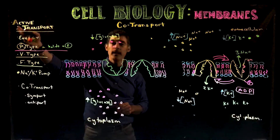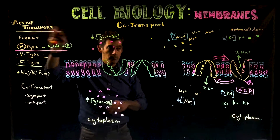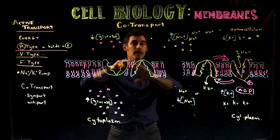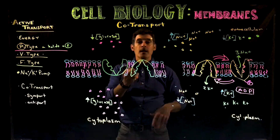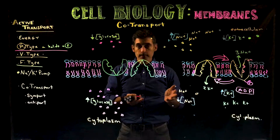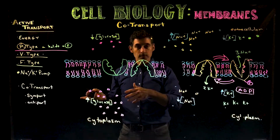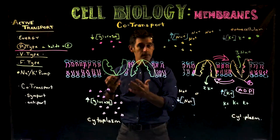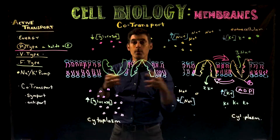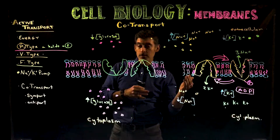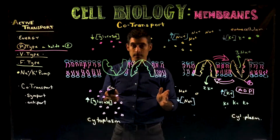Co-transport is another type of active transport. We're still talking about active transport, cell membranes, transmembrane proteins, and the movement across the membrane. We have diffusion, which we talked about first, and then active transport, which we're still talking about now. But this process of co-transport puts those two together — we're going to have diffusion and active transport happening at the exact same time.